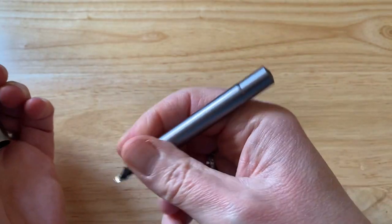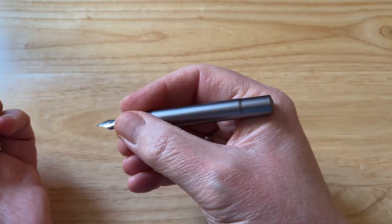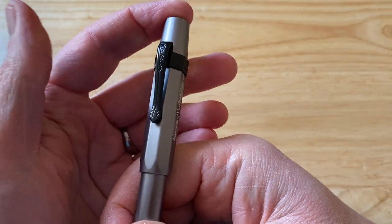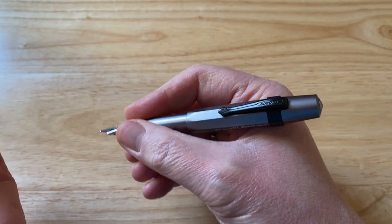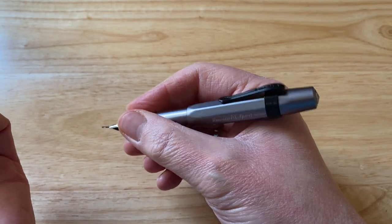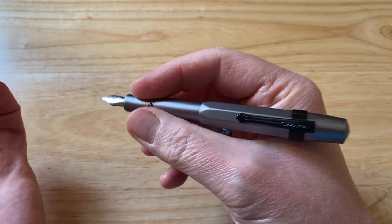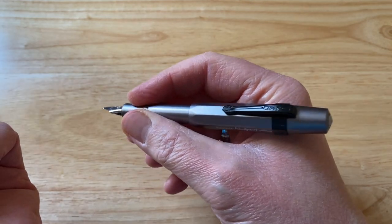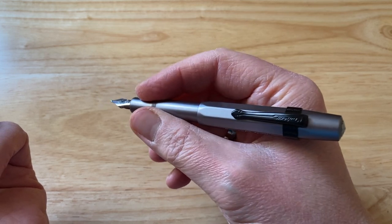So that is what the pen looks like uncapped and posted. Which of course these pens are designed to post. Posting is very deep, very secure and you get more of a full size fountain pen. Now with this Allsport, the Anthracite version, it's not particularly heavy.